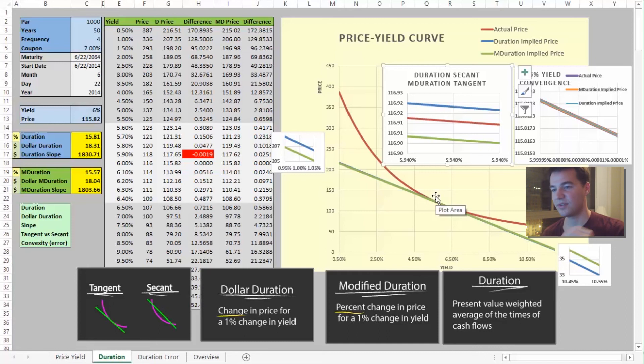So let's venture into duration error. So, as I previously mentioned a bit, this predicted price, based on duration, is a straight line, but our actual price-yield curve is convex. It's curved upward, concave upward.